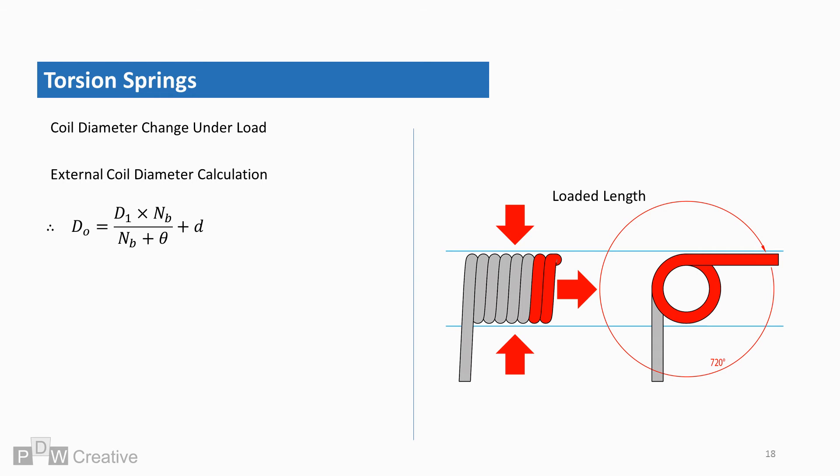The external coil diameter can be found by adding the wire diameter to the equation, where D0 is the outer coil diameter. The internal diameter is therefore found by deducting the wire diameter, where DI is the internal coil diameter.